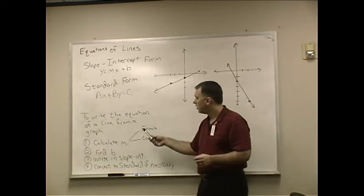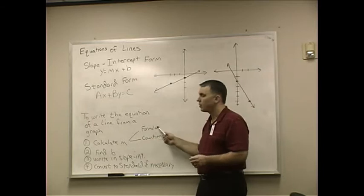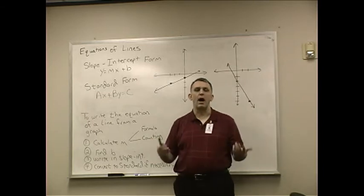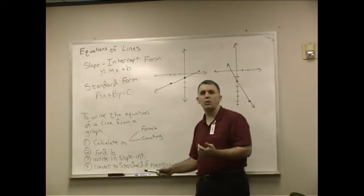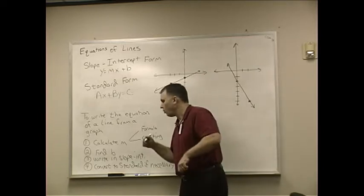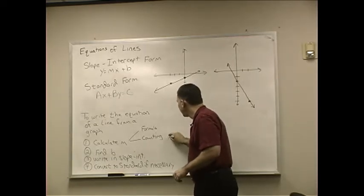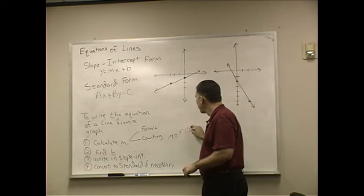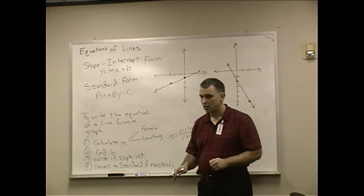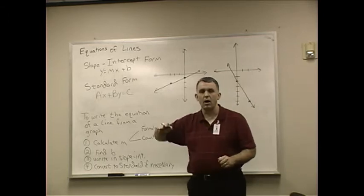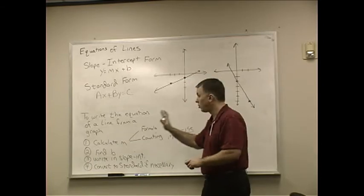So now, let's talk a little bit about calculating m. There is the formula, which is y2 minus y1 over x2 minus x1. And there's also a way to count it. One of the things that I haven't talked about with you yet is that slope is also the rise over the run.